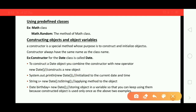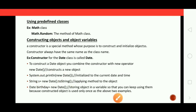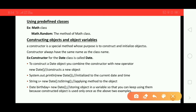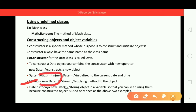Once construction is done, you can also apply a method to the object. For example, toString() is a method. The object 'new Date()' is constructed, so we can apply the toString() method to it — this yields a string representation of the date. We can apply methods to any object we have created.